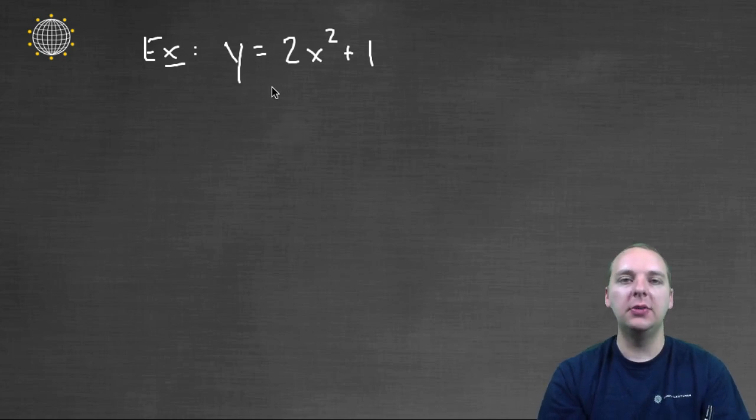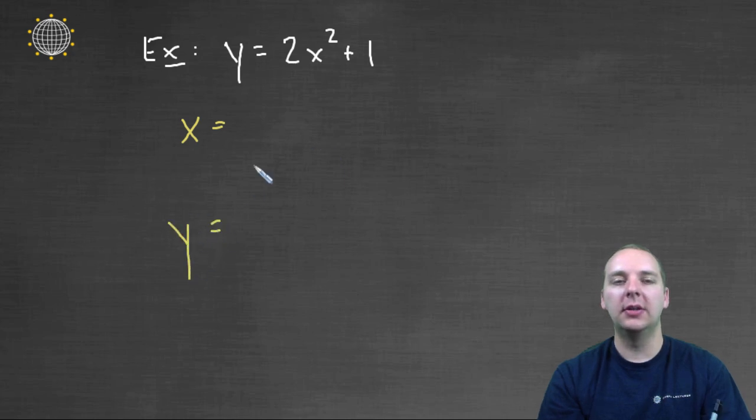Here's an example of an equation written in rectangular form. It has x's and y's. And let's see if we can parametrize this guy. So when we're done, we'll have x equal to something and y equal to something.